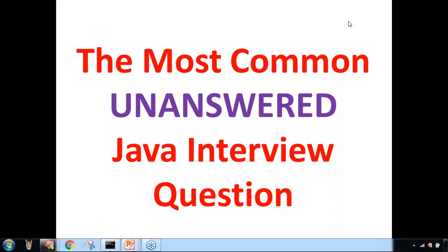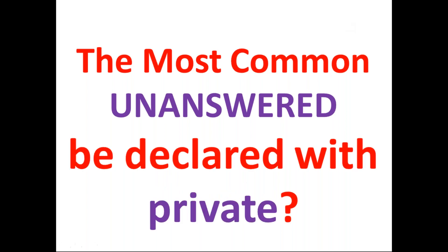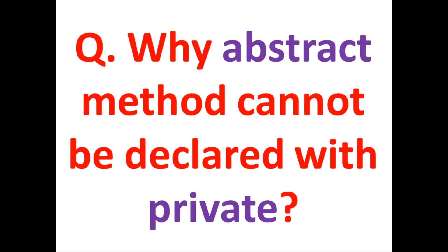Hi friends, welcome to DrugaSoft. The most common unanswered Java interview question I want to answer in this video. What is that question? Just observe: why can't an abstract method be declared with private? What is the relation between abstract and private? Why can't we declare an abstract method with the private modifier, or a private method with the abstract modifier? What is the reason for that?